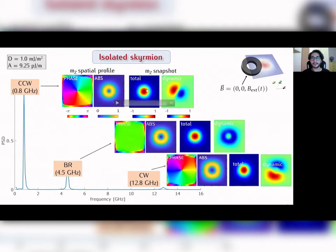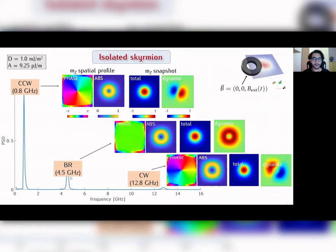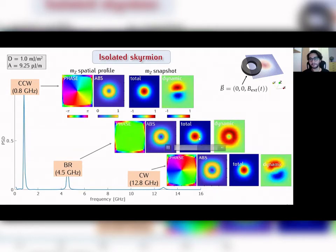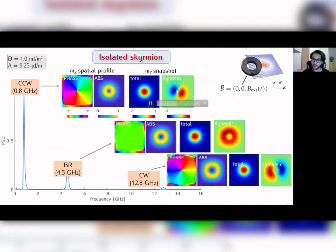Now we have another point of view of these three modes: the out-of-plane magnetization in time. On the left we have the total out-of-plane magnetization, while on the right the dynamic component. From the total component we can see the expansion-contraction behavior characteristic of radial modes, like the breathing mode. From the dynamic component of the azimuthal kind modes we can see the opposite directions of propagation of the spin wave.